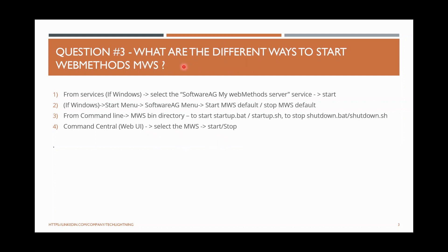Moving on to the next question: what are the different ways to start the webMethods My webMethods Server? Mainly in this video we are seeing all the admin related questions — the day-to-day activities of a normal admin person. For MWS, you can do it via Services and the Start Menu. From the command line, go to the MWS bin directory, where you have a startup.bat or startup.sh file. Run the bat file on Windows or the shell script on Linux. Similarly, a shutdown script is available in the same location. You can also use Command Central web-based UI via browser to select the MWS component and start or stop the application.